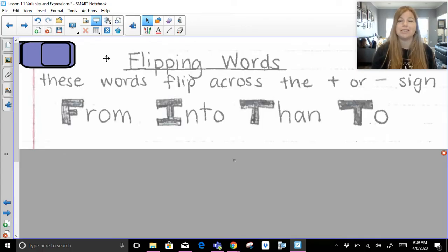And then to. If I say 2 is added to 5, that really means 5 plus 2. If I say 5 is added to 10, that's really saying 10 plus 5. So those are my four flipping words. From, into, then, and to.